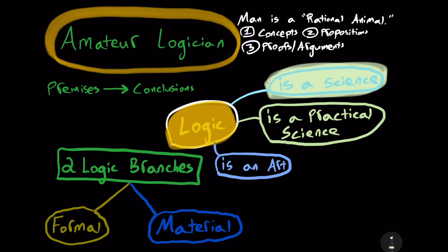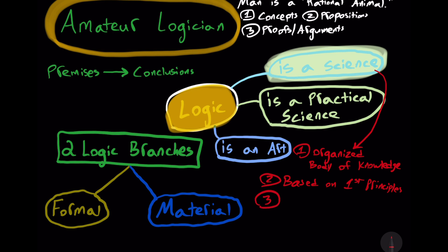Logic is a science. And a science traditionally defined is one, an organized body of knowledge, two, based on first principles that are grounded which allow us to launch a search, and that three, science searches for causes, laws, or patterns.